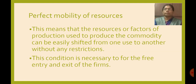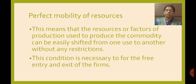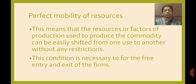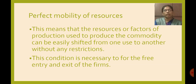The fourth feature of perfect competition market is perfect mobility of resources. Resources, meaning factors of production, can be easily switched from production of one commodity to another. Producers who exit can shift their resources to any other commodity's production. This condition is necessary for the free entry and exit of firms.